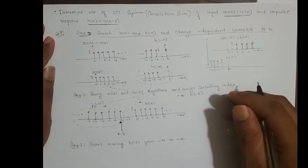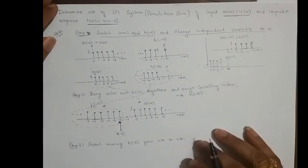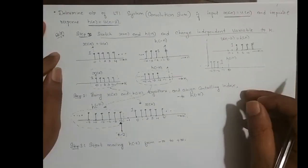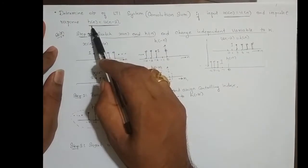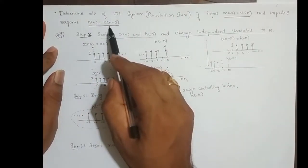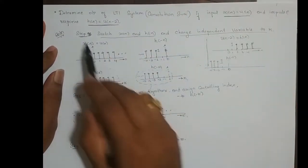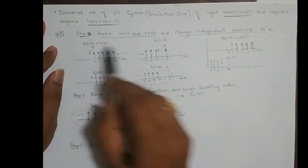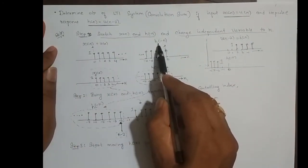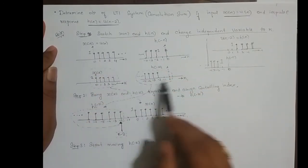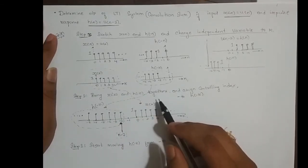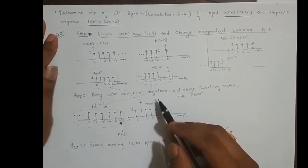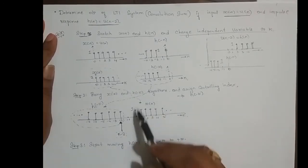We will continue with the previous problem which we left halfway. To summarize: we had input sequence x[n] which was a unit step function, and impulse response h[n] which was a unit step function shifted right two times. Step one was to sketch x[n] and h[-n], and we replaced the independent variable from n to k to match the convolution equation with summation x[k] and h[-k].